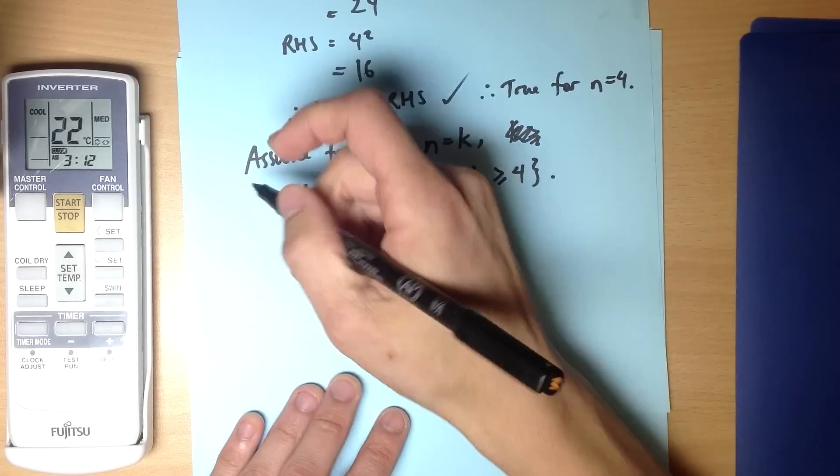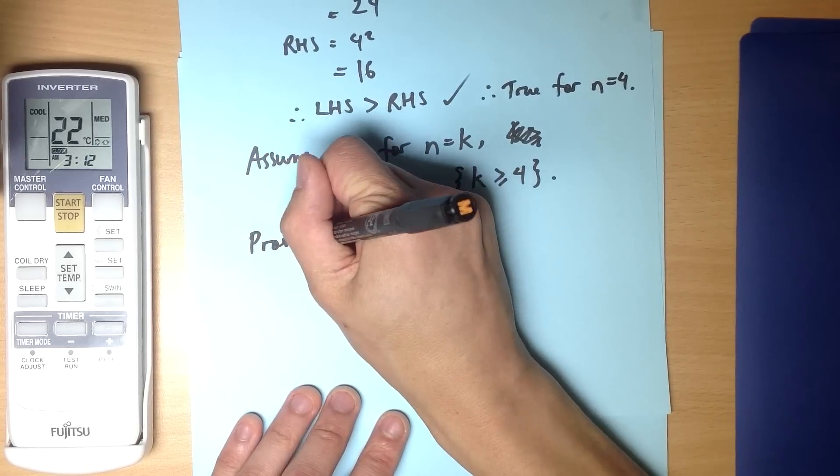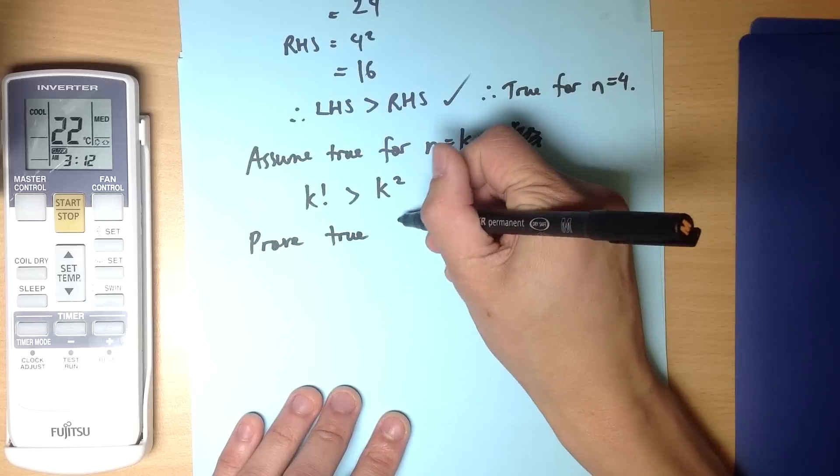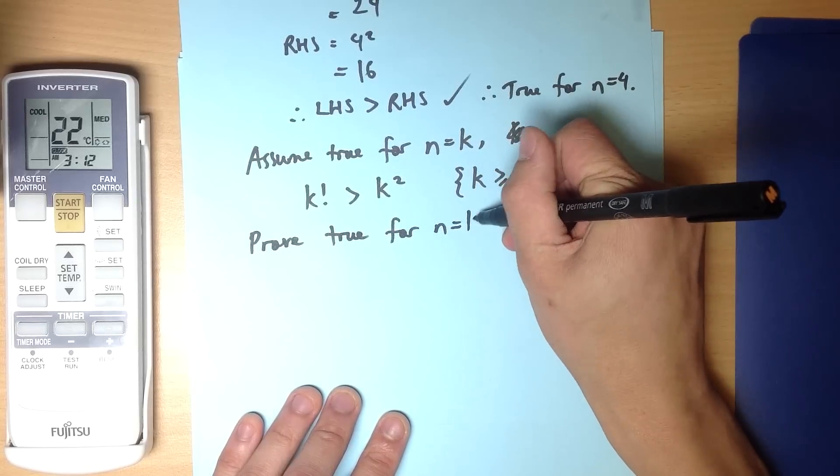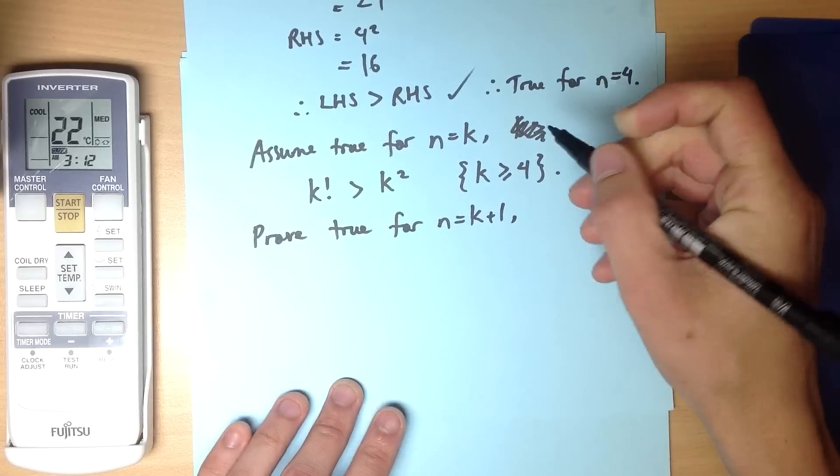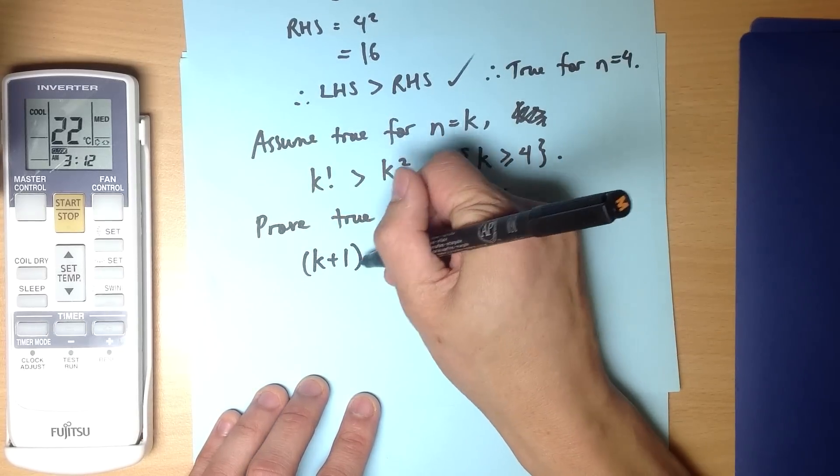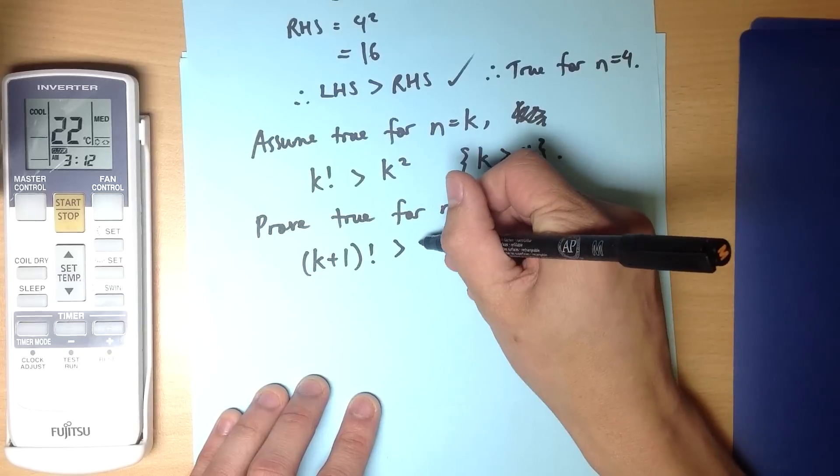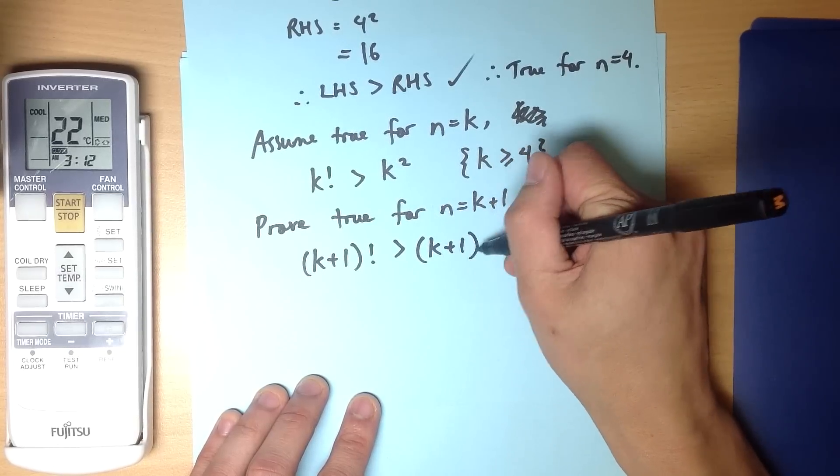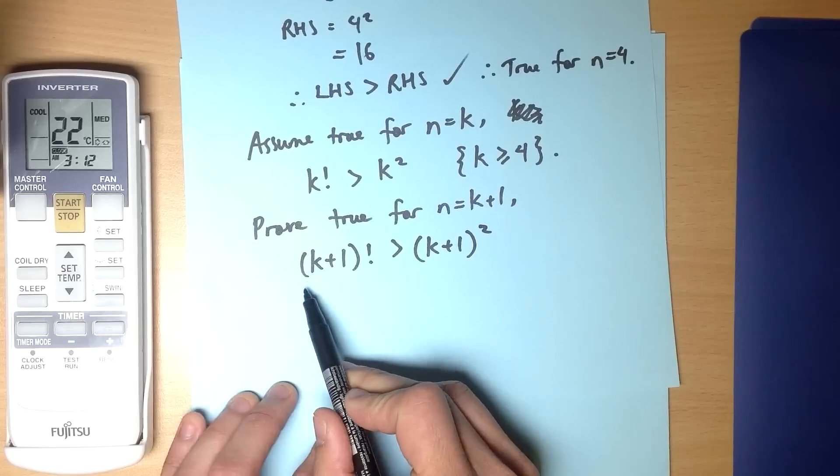Now that's what I've assumed. Now on the basis of that assumption, I want to prove that it's true for the next value along, k plus 1. So that looks like this: (k+1)! > (k+1)². This is what I want to show.